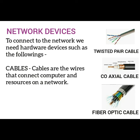Cables कई तरह के होते हैं। जिसमें सबसे पहले हम बात करेंगे twisted pair cables। ये तांबे के दो तार का बना होता है, जिस पर प्लास्टिक की एक layer चढ़ी होती है। ये तार आपस में लिपटा हुआ होता है।